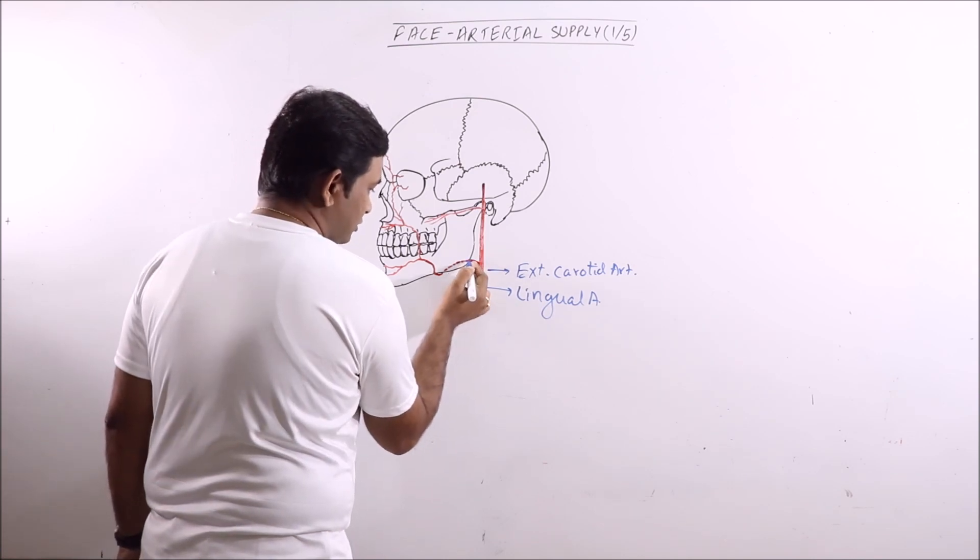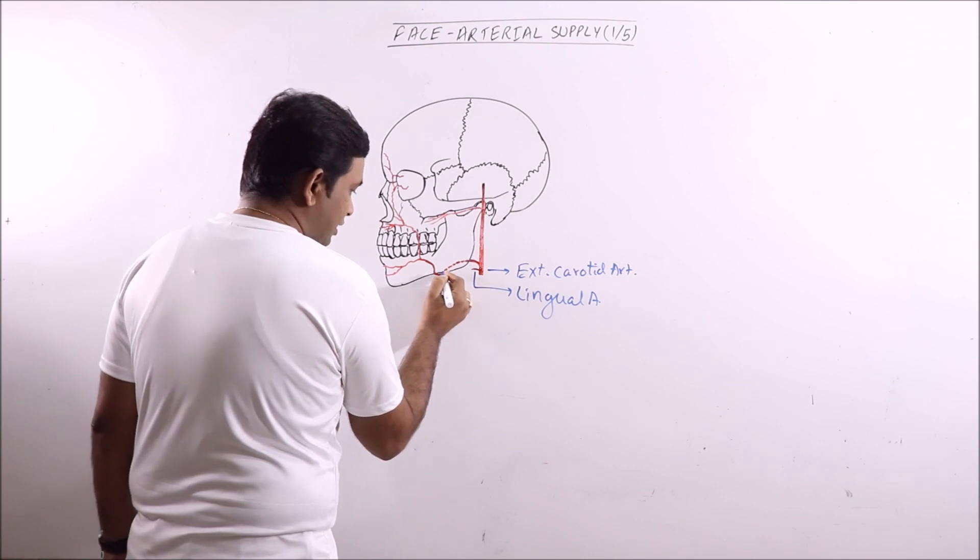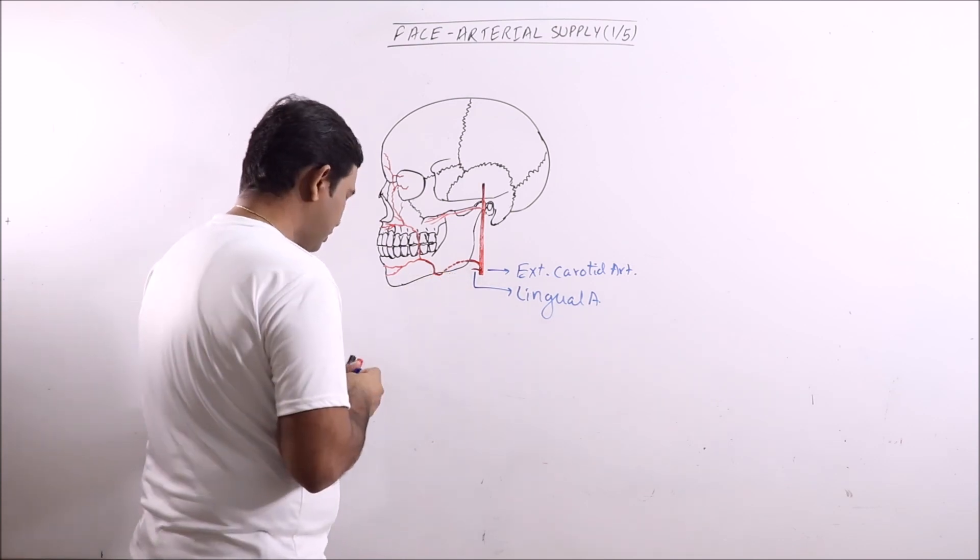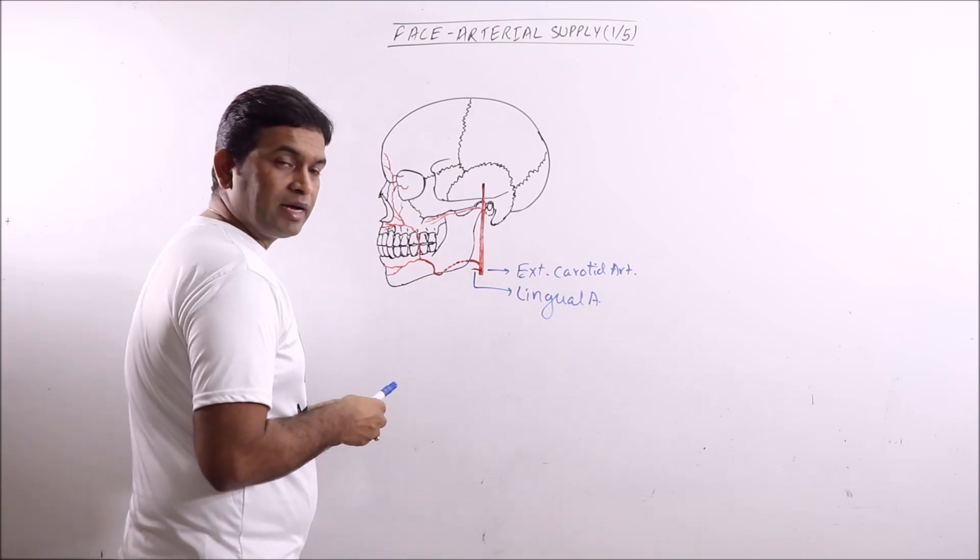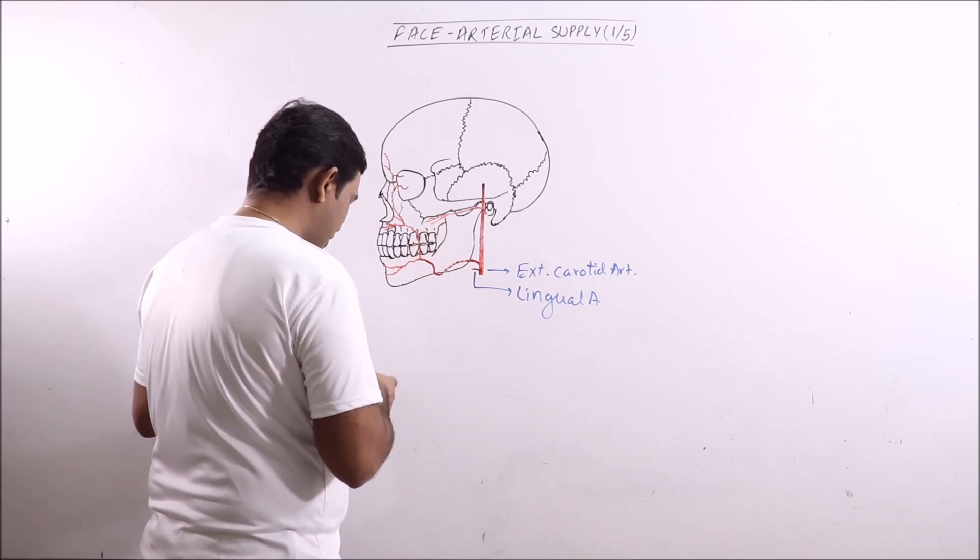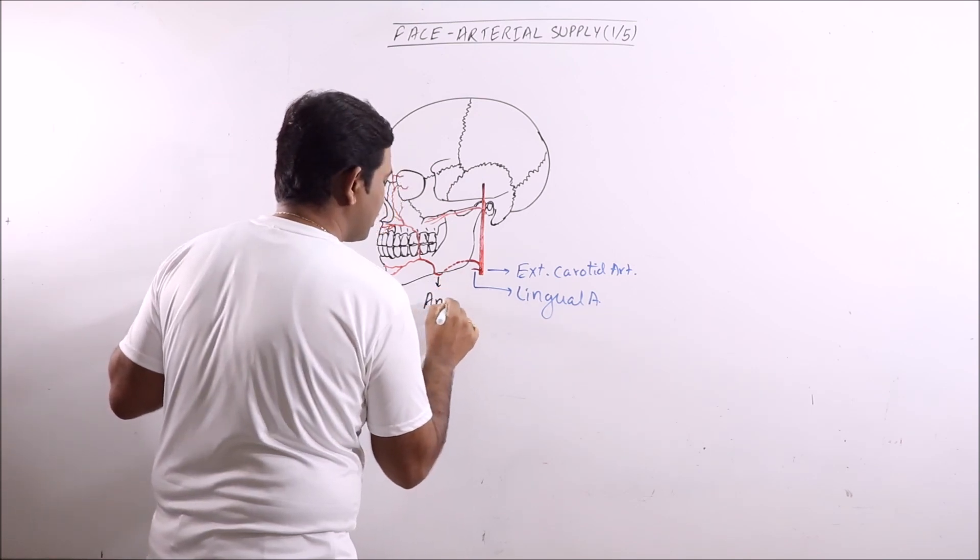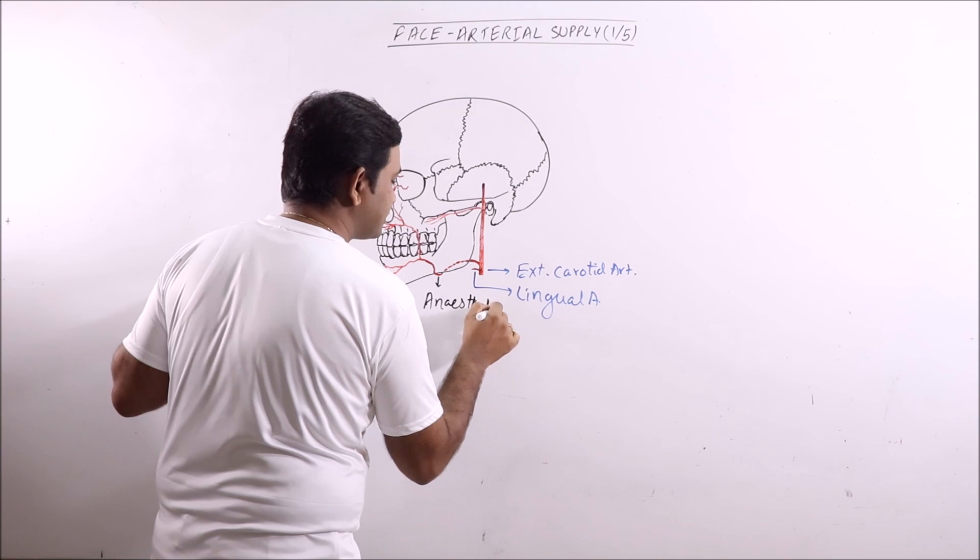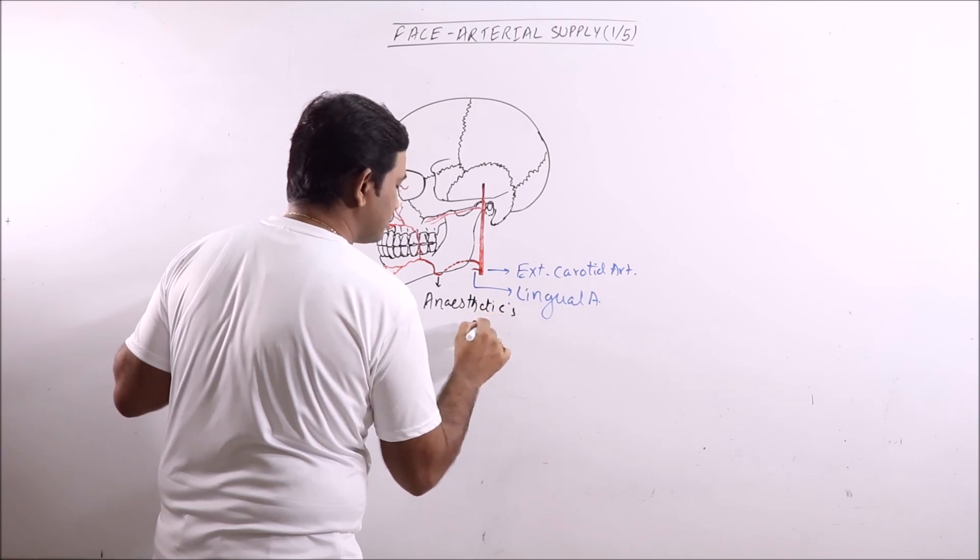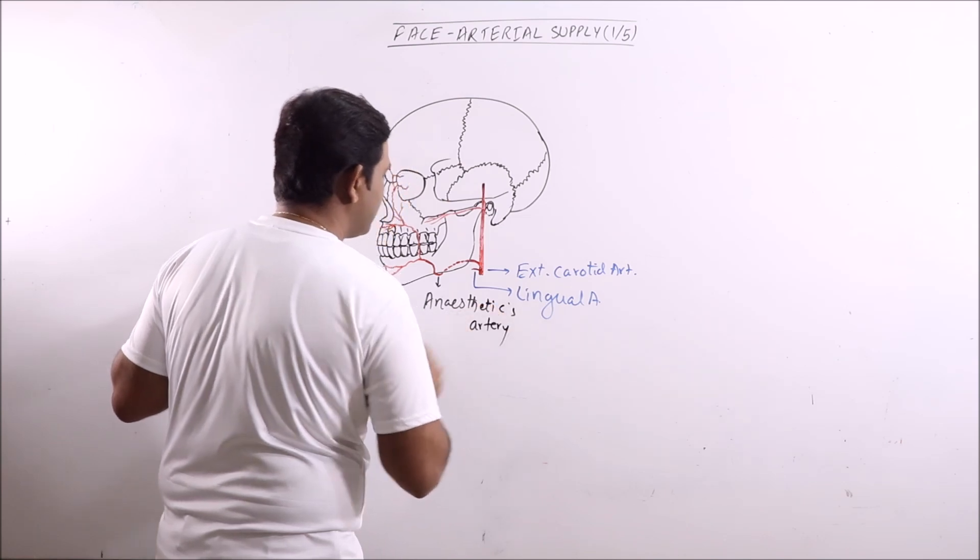Thereafter it is covered over by the ramus of the mandible, and it turns around the base of the mandible by piercing the masseter and it enters the facial part. Here it is also known as anesthetic artery because it is easily palpable here.